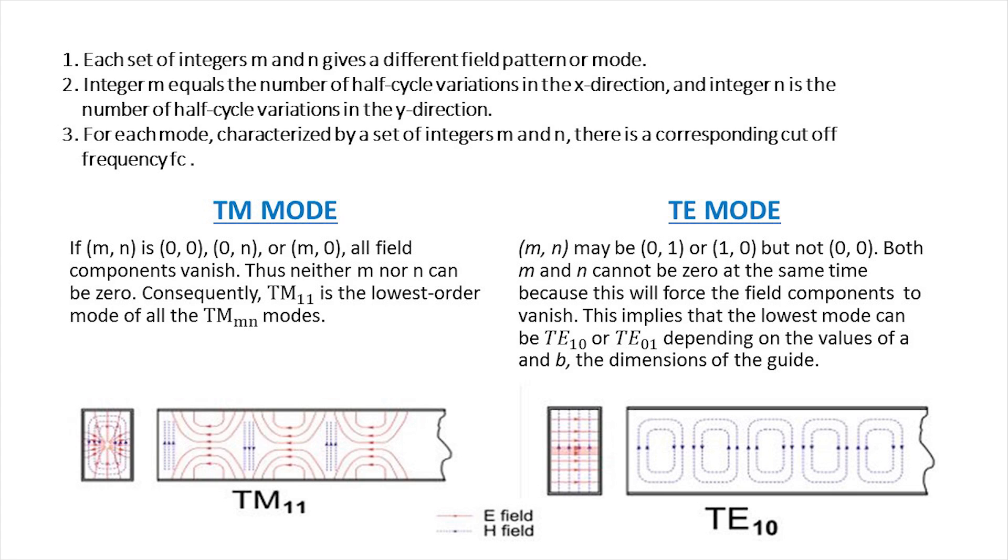TE mode: m, n may be (0,1) or (1,0) but not (0,0). Both m and n cannot be 0 at the same time because this will force the field components to vanish. This implies that the lowest mode can be TE_10 or TE_01 depending on the values of a and b, the dimensions of the guide. It is a standard practice to have a greater than b so that 1 upon a square is less than 1 upon b square. Thus, TE_10 is the lowest mode. The dominant mode is the mode with the lowest cutoff frequency or longest cutoff wavelength.